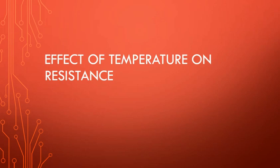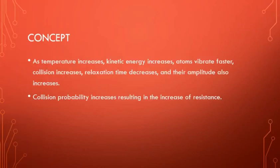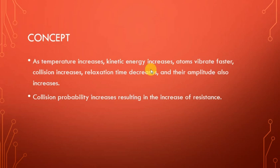In metallic substances, with rising temperature the interatomic vibrations increase and hence offer more resistance to the movement of electrons, causing less current. With increasing temperature, the resistance of metallic substances increases. What happens is when temperature increases, the kinetic energy of atoms increases, which results in faster vibration of atoms.